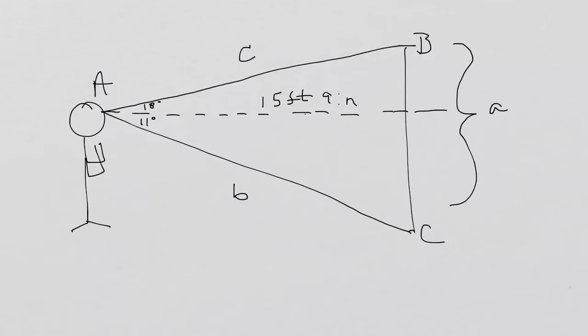In this example, our angle of elevation is 18 degrees right here, and our angle of depression is 11 degrees, which is right here. And our distance from the object is 15 feet 9 inches.